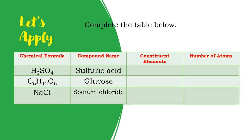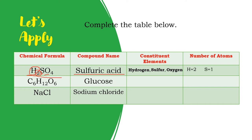Let's apply now — complete the table below to check what we've learned. For number one, the chemical formula is H2SO4. The name of that compound is sulfuric acid. The constituent elements are hydrogen, sulfur, and oxygen. For the number of atoms: hydrogen has two (look at the subscript), sulfur has one (no subscript means only one), and oxygen has four.